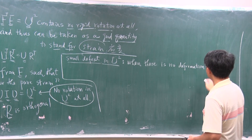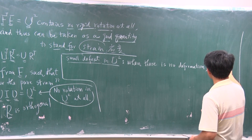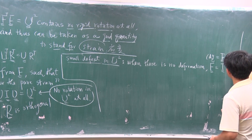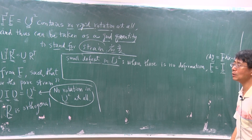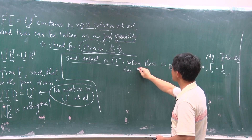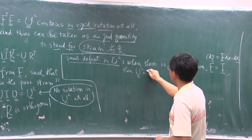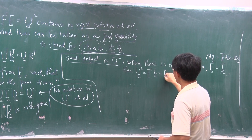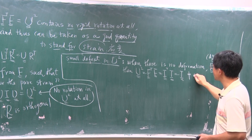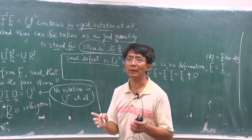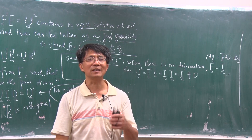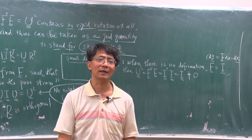Therefore, when there is no deformation at all, F equals I, because dy equals dx. By this time, F equals I, and then U squared equals F-transpose times F equals I times I equals I. It is good, but not very good, because now it is not equal to zero. We expect that a strain tensor will be zero when there is no deformation. Someone may say it is good enough because it equals the identity matrix, but it is not perfect — not zero strain for zero deformation.